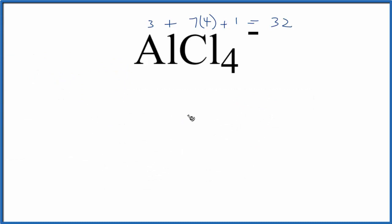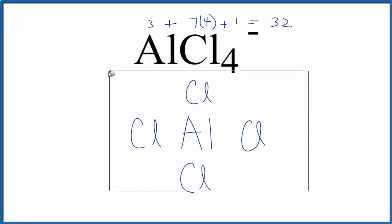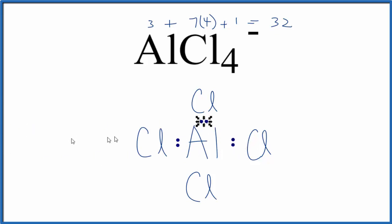We'll put aluminum in the center, as it's the least electronegative, and then put the chlorine atoms around it. We have 32 total valence electrons for AlCl4 minus. Let's put electrons between atoms to form the chemical bonds. That means we've used 8 out of the 32 valence electrons.